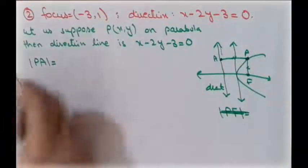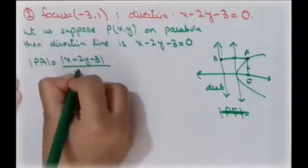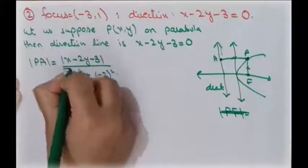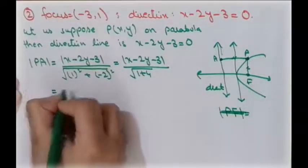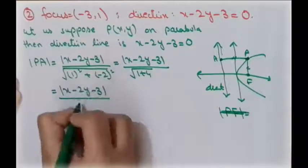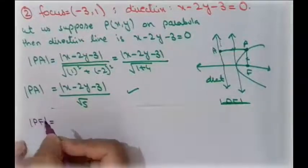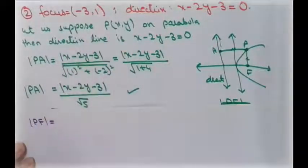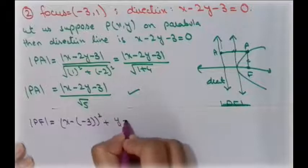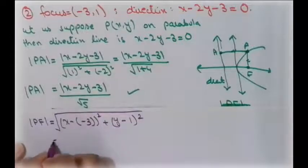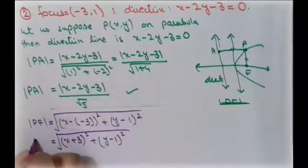We find the distance PA using the point-to-line formula: PA = |x − 2y − 3| / √(1² + (−2)²) = |x − 2y − 3| / √(1 + 4) = |x − 2y − 3| / √5. Now to find the distance PF between the two points P and the focus (−3, 1): PF = √((x − (−3))² + (y − 1)²) = √((x + 3)² + (y − 1)²).